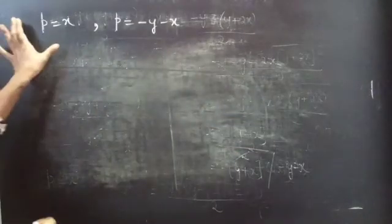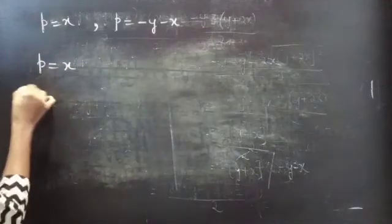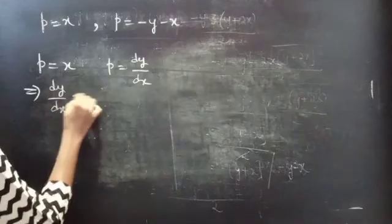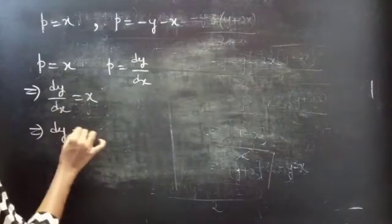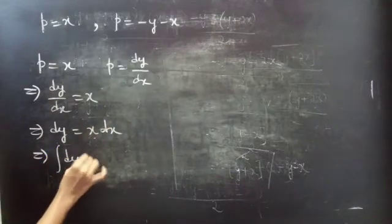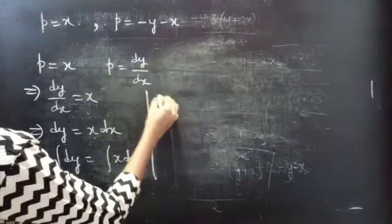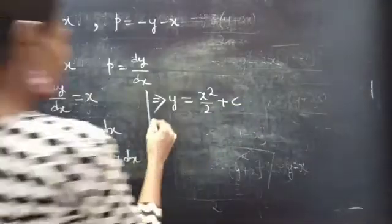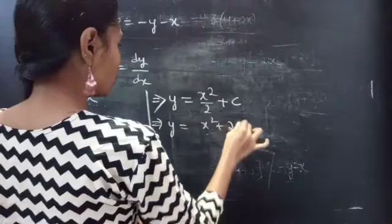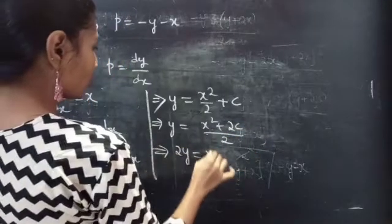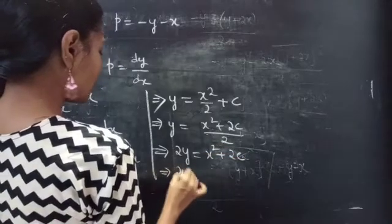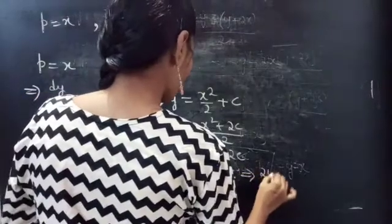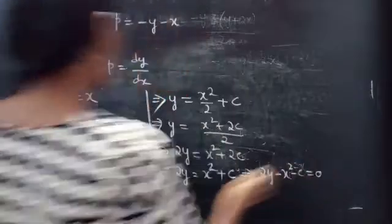Let's find the solution for P = X. Put P = dy/dx, so dy/dx = X. Taking dx to the right-hand side gives dy = X dx. Integrating both sides: y = X²/2 + c, which gives 2y = X² + 2c. Writing 2c as c, we get 2y − X² − c = 0, which is the solution for the first equation.